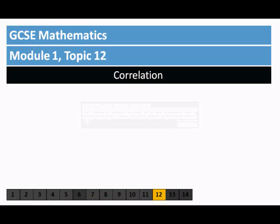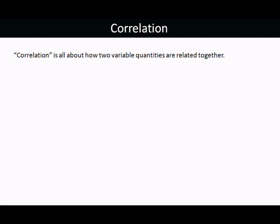Topic 12 is called correlation. Correlation literally means related together. Correlation is all about how two variable quantities are related together.